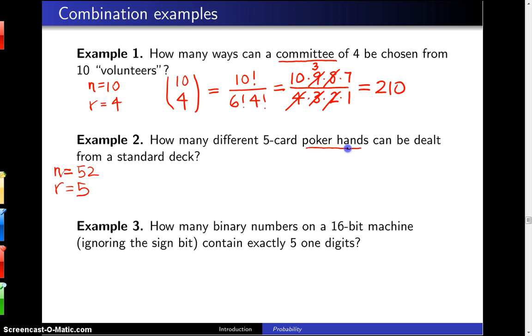Since we're working with poker hands, it does not matter the order with which the cards are delivered to the hand. That means that combinations are appropriate. So in this case we want 52 choose 5.